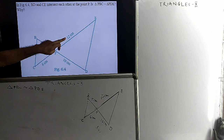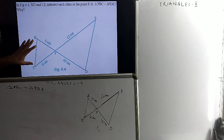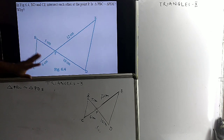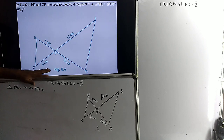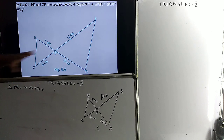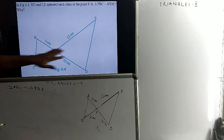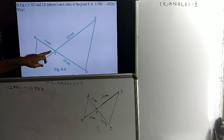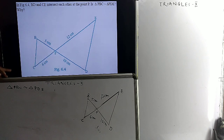But for the SSS criteria, the ratio of corresponding 3 sides of one triangle and the ratio of corresponding 3 sides of the other triangle require a third side measurement, which is not there. That is why we apply another condition. The additional information here is that these two angles are vertically opposite angles, so we use this.